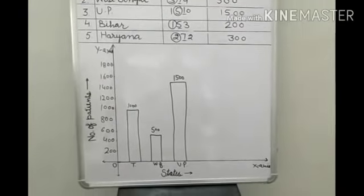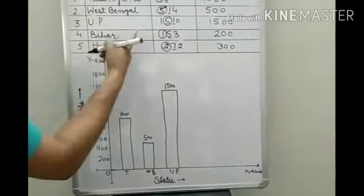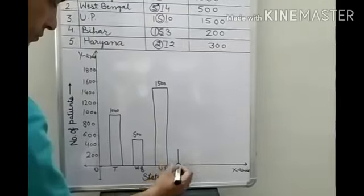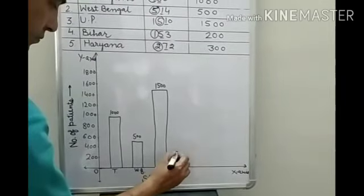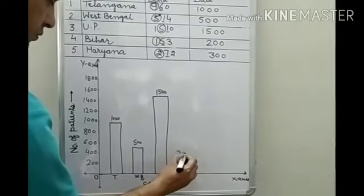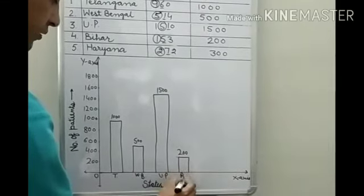The next will be Bihar. Corresponding to Bihar, there are 200. So 200 is this. Here you will write Bihar.